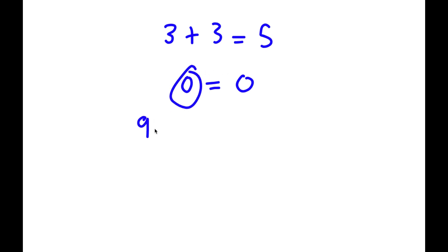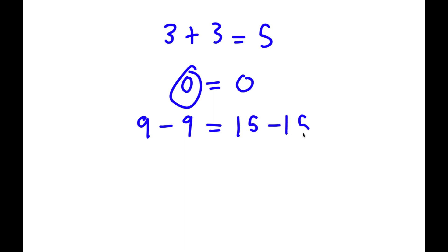For the left-hand side, I'm going to rewrite zero as nine minus nine, which is obviously true. For the right-hand side, I'm going to write this as 15 minus 15. This is legal — nine minus nine is zero, 15 minus 15 is zero, so there are no issues.